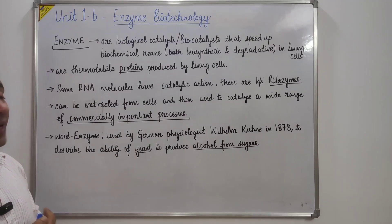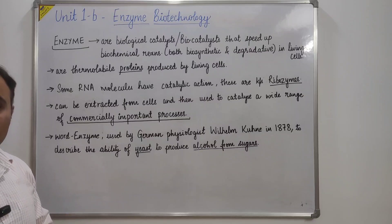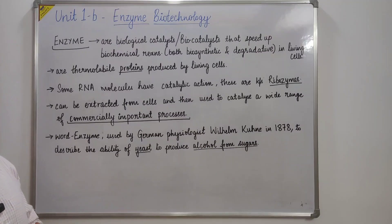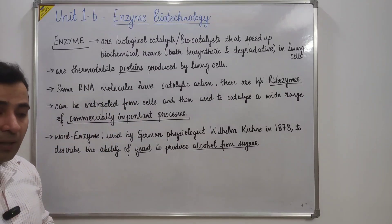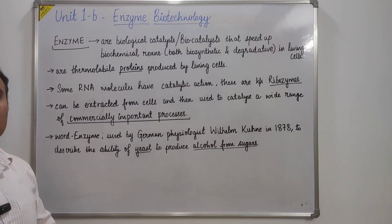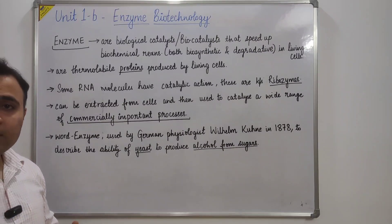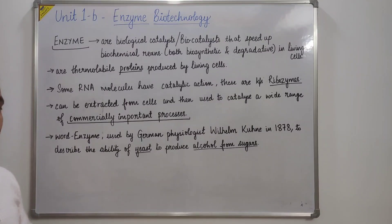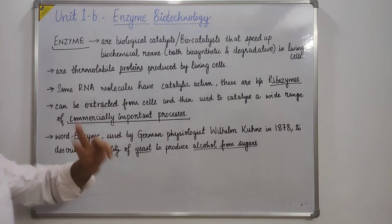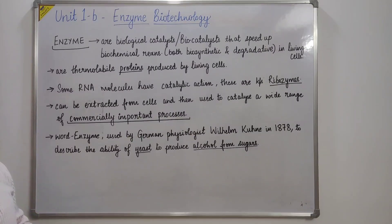Examples of biosynthetic reactions are nucleic acid synthesis and ATP synthesis. In degradative reactions, a metabolite is getting degraded — for example, alpha amylase, which is an enzyme, degrades starch into glucose. So both types of reactions are catalyzed by enzymes.